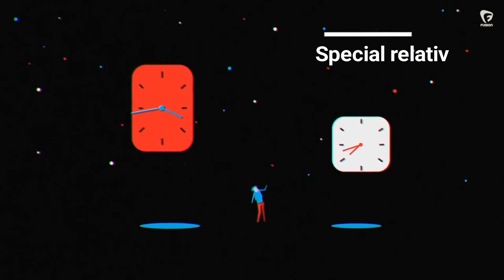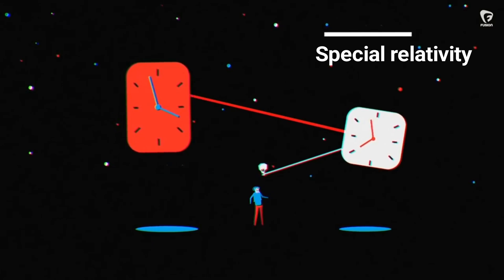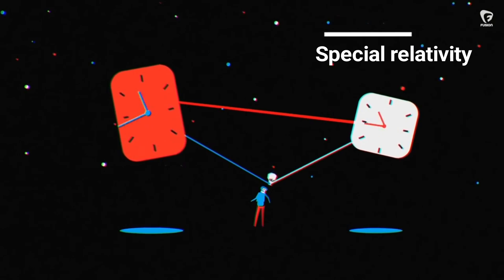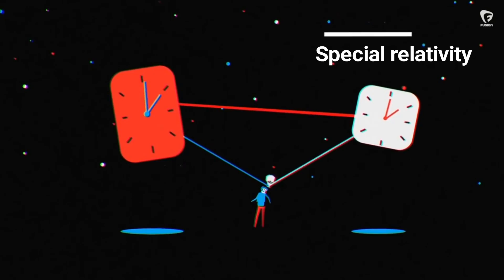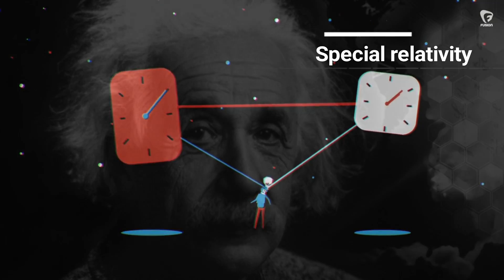Special relativity — another contribution exposed in 1905. It shows that the speed of light is constant, while position and time depend on the speed of the body.